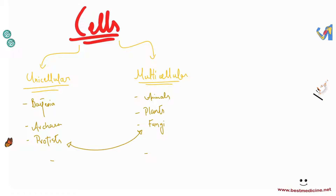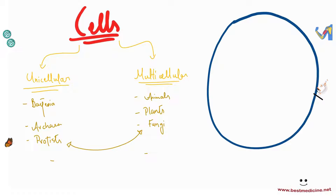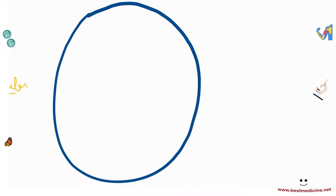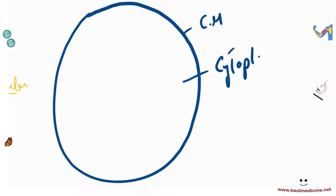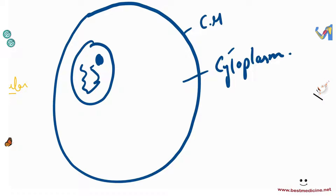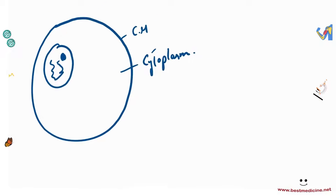Let me draw an animal cell here. A cell — at least an animal cell — should contain a cell membrane, a cytoplasm, and a nucleus. Now there are living things in which the cells do not contain a nucleus, and those are called prokaryotes or prokaryotic organisms.